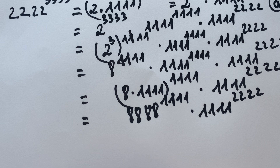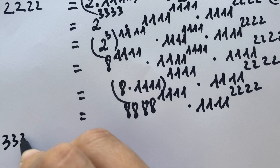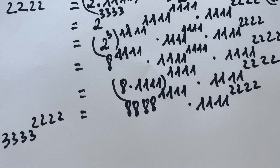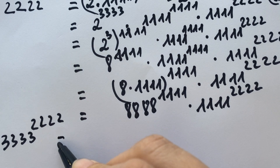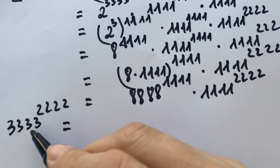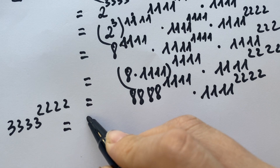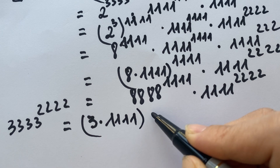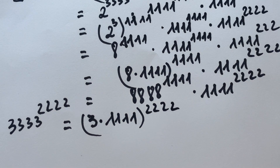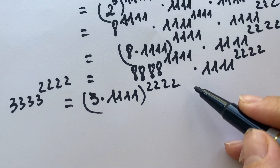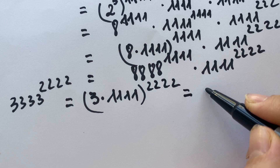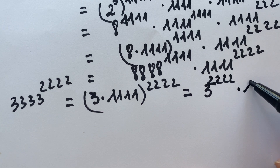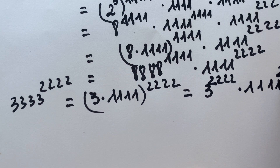Next, you need to break down 3333^2222. We note that 3333 equals 3 times 1111. So 3333^2222 equals (3 times 1111)^2222, which equals 3^2222 times 1111^2222.